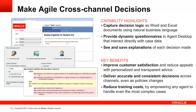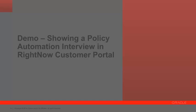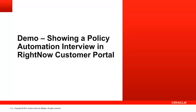The cross-channel capability is hooked in closely with RightNow. We've got first-class understanding of the RightNow data model, and you can choose whether a particular interaction is going to be exposed through the customer portal or through the contact center, with the very powerful benefits of delivering consistency and accuracy across all channels and driving down training costs. We're going to be very demo-heavy today. Because we've got a fairly diverse audience with some people coming to policy automation for the first time, we wanted to cover off that introductory material. Now I'm going to hand over to Fiona who will show a demonstration of how to use policy automation interviews in the RightNow customer portal.